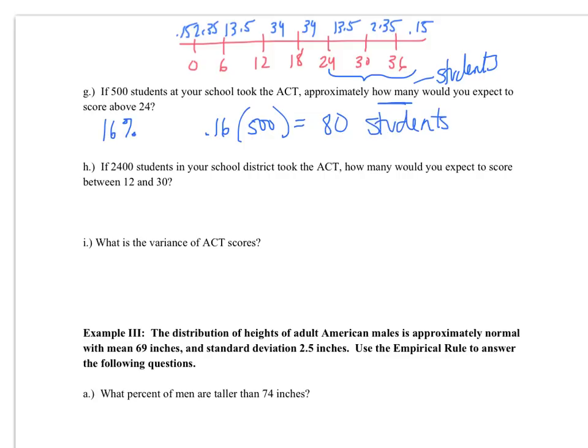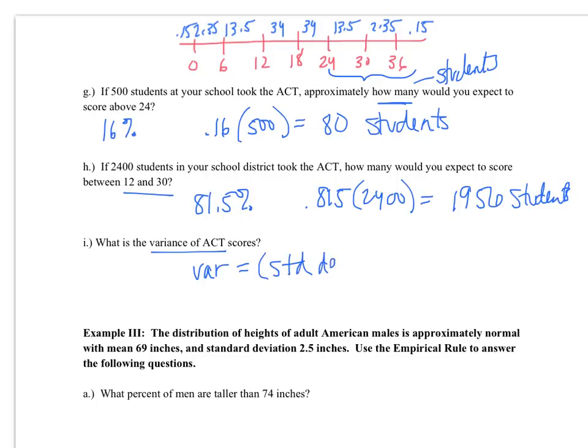The next part says if 2,400 students in your school took the ACT, how many would you expect to score between 12 and 30? So I want to look at 12 and 30 and from 12 to 30, that represents 81.5%. So I'm going to do 0.815 times 2,400 and we get 1,956 students. Lastly, we are asked what is the variance of ACT? Now a lot of times people get caught off guard here and they try to write some explanation about how the scores varied and so on. But what we're looking for is that variance is equal to the square of our standard deviation. And so then our variance in this part would be equal to 6 squared, which is 36.